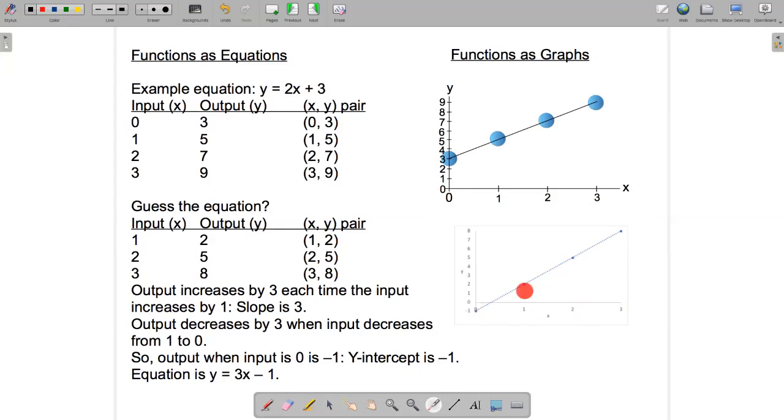The slope: as x goes up by 1, y goes up by 3. The y-intercept: when x equals 0, y equals minus 1. So the equation of this line is y equals 3x minus 1.